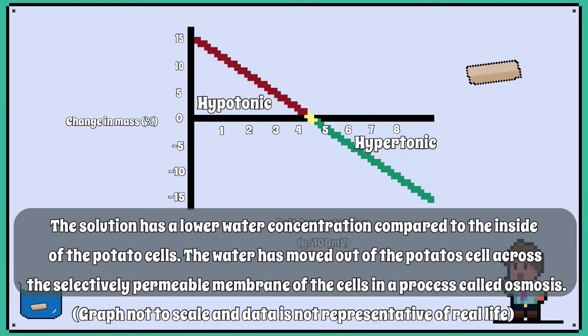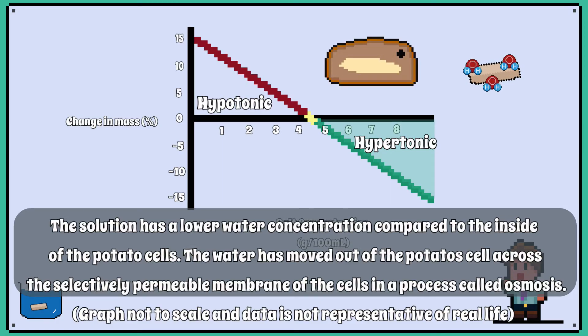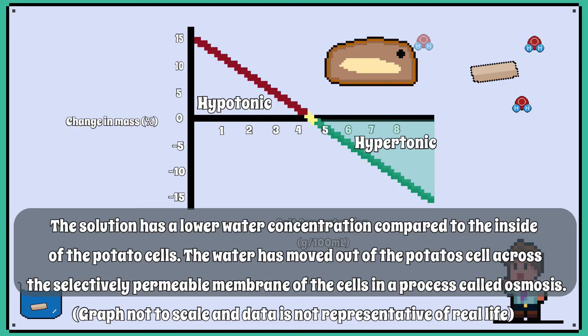If the mass of the potato strip has gone down, then the solution has a lower water concentration compared to the inside of the potato cells. The water has moved out of the potato cells across the selectively permeable membrane of the potato cells via a process called osmosis. The scientific term for a solution that has a lower water concentration than the inside of the cell is a hypertonic solution.